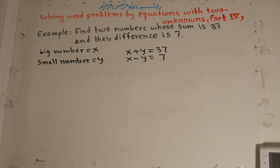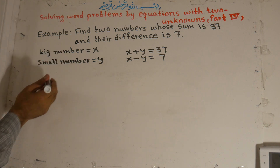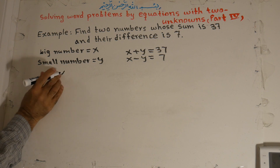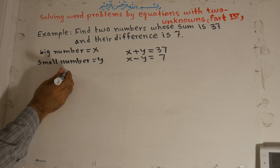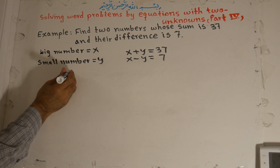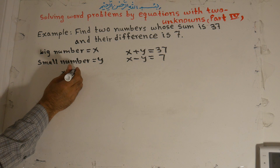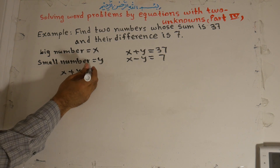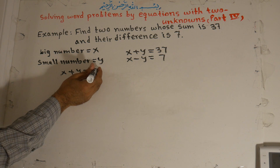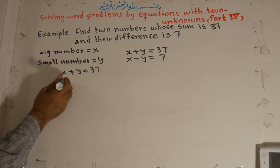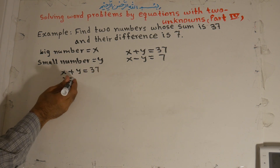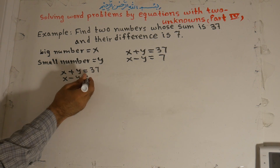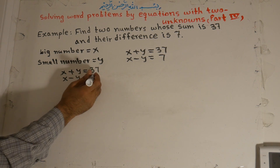We write these equations: x plus y is equal to 37, and x minus y is equal to 7.